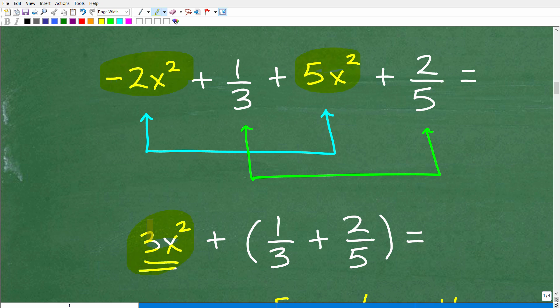That gives us a 3, a positive 3x squared. Of course, we're dealing with positive and negative numbers. And then here, I have a 1 third and 2 fifths, and I need to add those fractions. And of course, fractions is a key skill that your child should have down at the pre-algebra level.